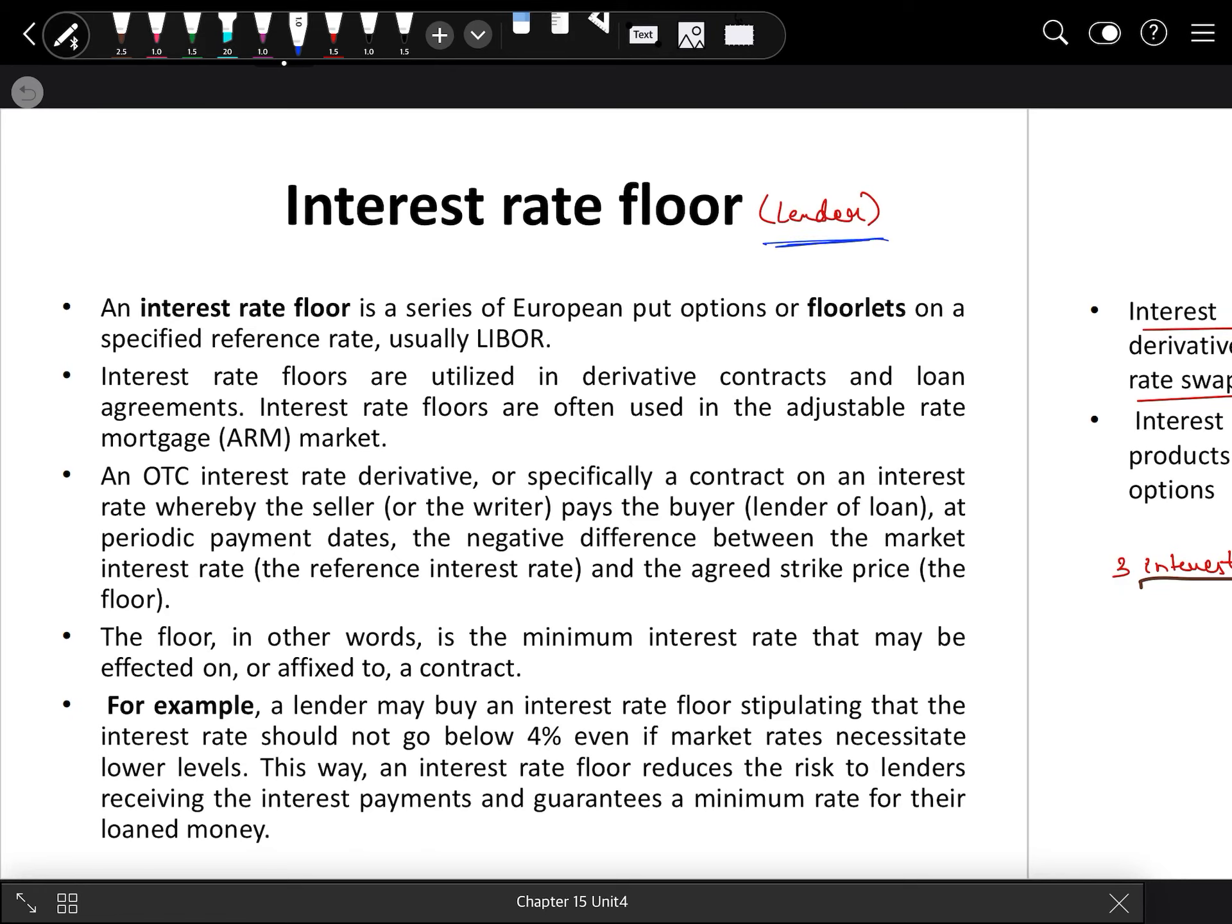If a lender has a loan to someone but wants security against loss, he decides a strike rate with the bank. If the interest rate is less than 10%, then the bank will compensate it. We use the floor for the lender to save against interest rate fluctuations. An interest rate floor is a series of European put options or floorlets on a specified reference rate, usually LIBOR. Interest rate floors are utilized in derivative contracts and loan agreements, often used in the adjustable rate mortgage market.